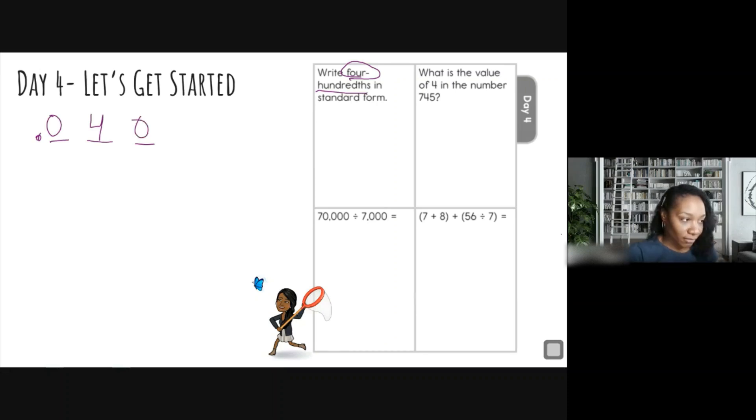So in standard form this is, sorry let me erase that. All right, so in standard form I have four hundredths.